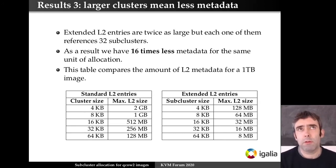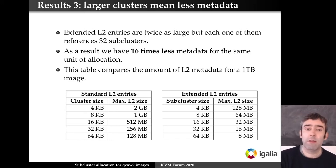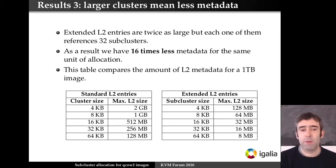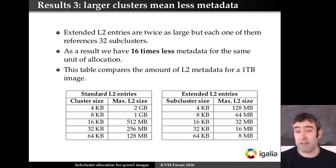Although extended L2 entries are twice as large as normal L2 entries, since each L2 entry now points to 32 sub-clusters, the end result is 16 times less metadata for the same unit of allocation. Comparing clusters in traditional L2 entries to sub-clusters in extended L2 entries: for a 64k cluster size, you would need 128 megabytes of cache for a one terabyte image, but with extended L2 entries and 64k sub-clusters you only need 8 megabytes. So we can have much larger clusters and keep good performance without needing so much memory for the cache.